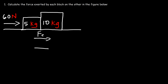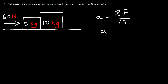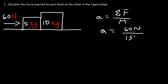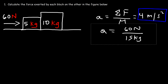To calculate those contact forces, the first thing we need to do is find the acceleration of the system. The acceleration is the total force driving the system in motion divided by the total mass. The only force driving the system is the external force, 60 N. The total mass is 5 plus 10, which is 15 kg. So 60 N divided by 15 kg gives us an acceleration of 4 m/s². Both blocks share the same acceleration because they move together.